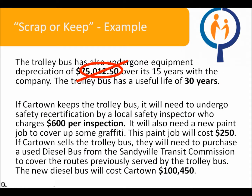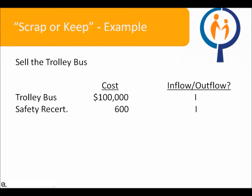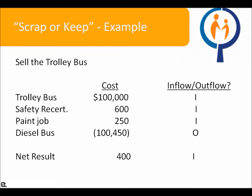Depreciation is another sunk cost — how much the trolleybus has depreciated over 15 years has no impact on our current decision. What we should consider, though, is the $600 inspection and $250 paint job. As both of these items can be avoided if Cartown sells the trolley, this creates a $600 and $250 inflow of cash. Cartown will also need to purchase a new diesel bus if they sell the trolley, creating an outflow of $100,450. To summarize: the trolley sale creates an inflow of $100,000; safety recertification an inflow of $600; the paint job an inflow of $250; and the diesel bus an outflow of $100,450. The net result is a $400 inflow, meaning the best decision for Cartown is to sell the trolley bus.